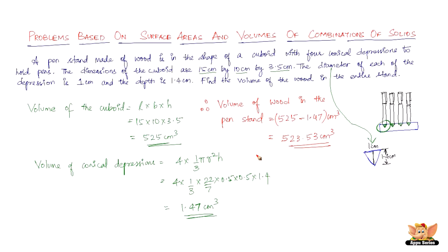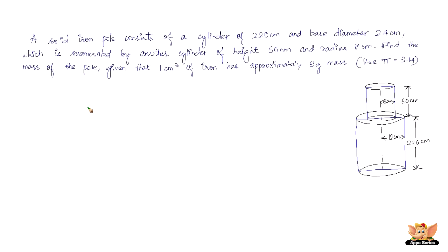Before we conclude this video, let's quickly solve another simple problem. A solid iron pole consists of a cylinder of height 220 cm and base diameter 24 cm, surmounted by another cylinder of height 60 cm and radius 8 cm. Find the mass of the pole, given that 1 cm³ of iron has approximately 8 grams mass. All we have to do is find the total volume and multiply it by 8 grams, since 1 cm³ of iron weighs 8 grams.